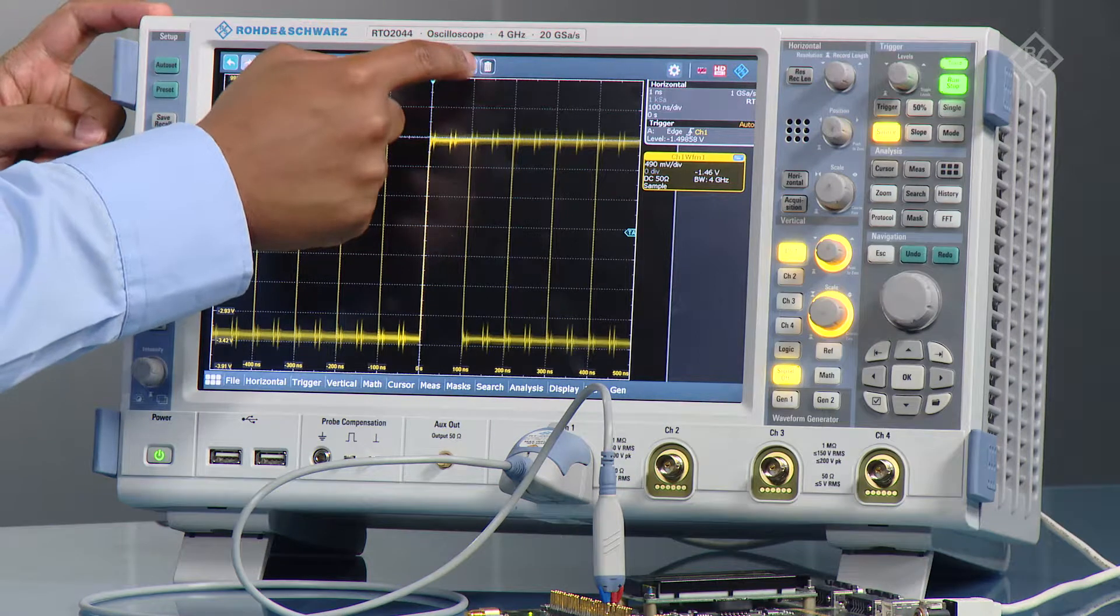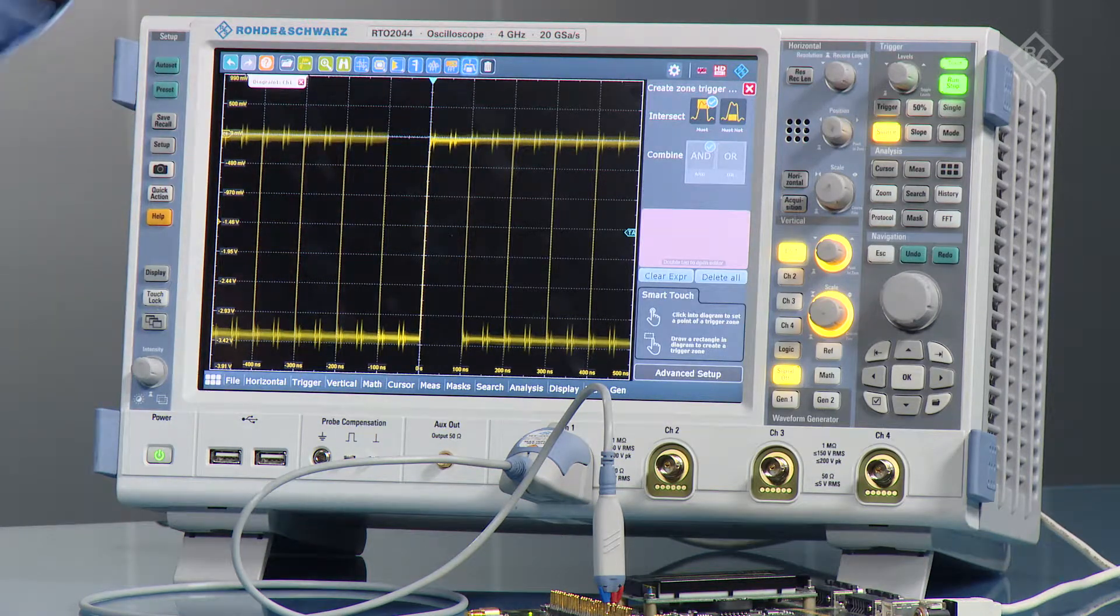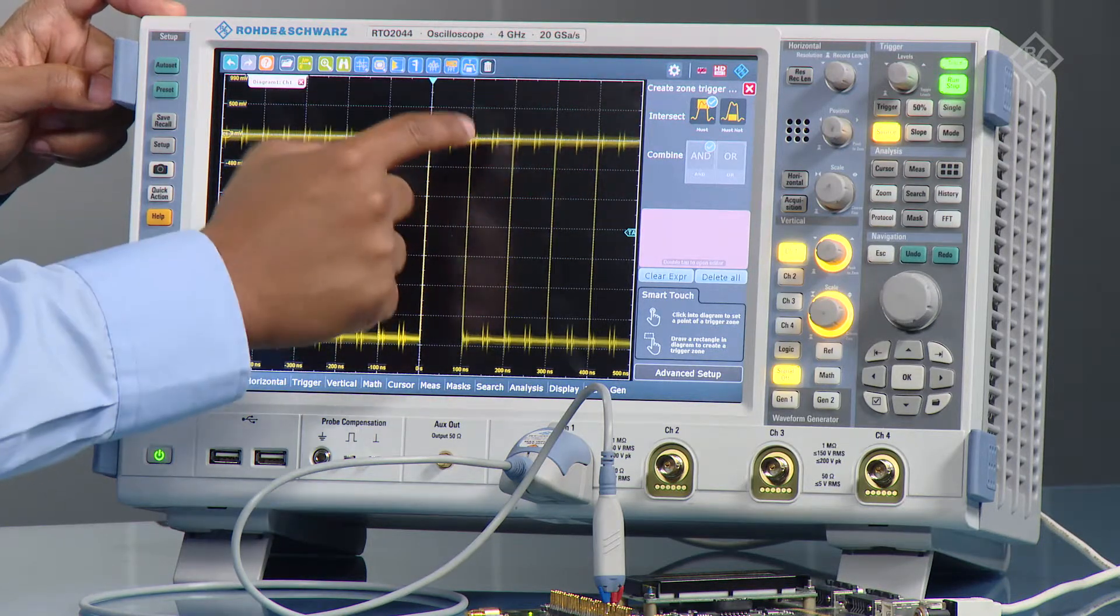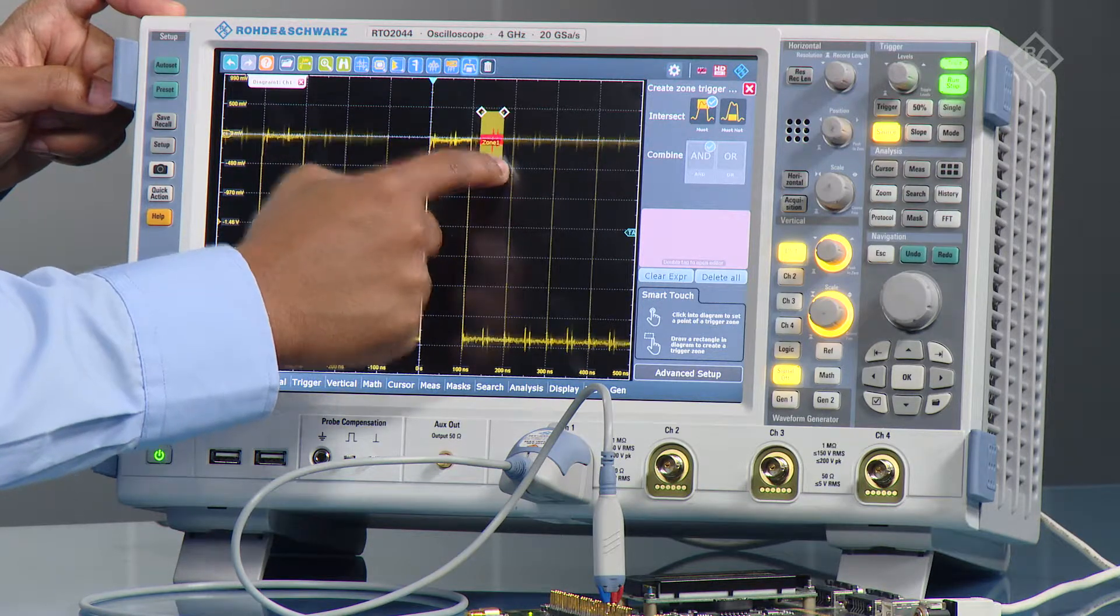So on the RTO, you have the zone trigger button here. That allows you to define a must intersect or must not intersect box. So as a start, I'm going to say must intersect, and then I can draw a box here. And then it'll only isolate anything where the waveform has hit the box.